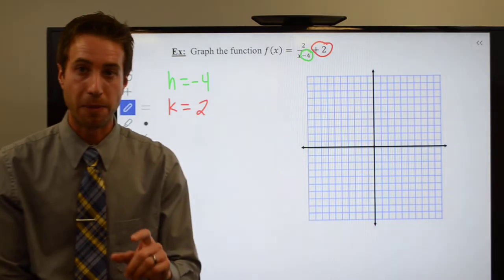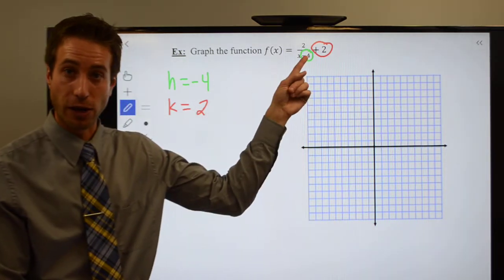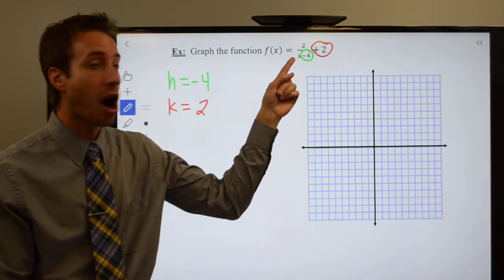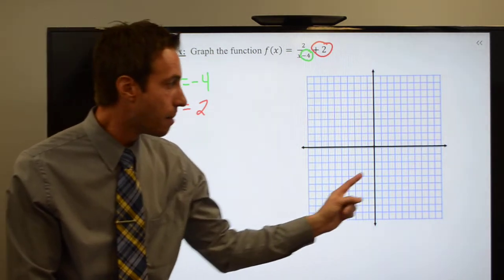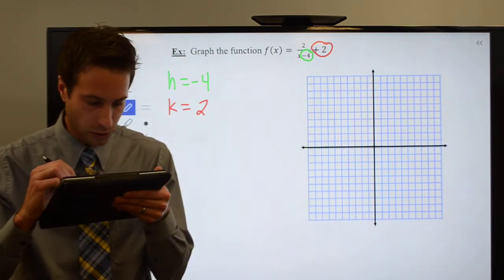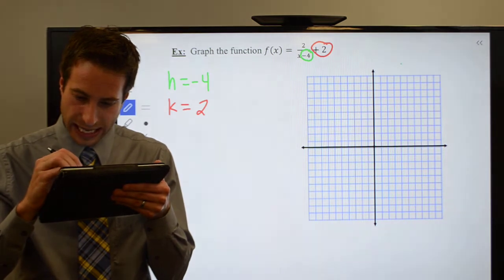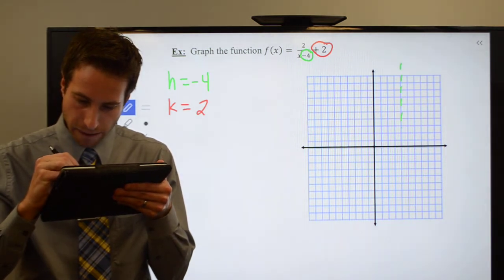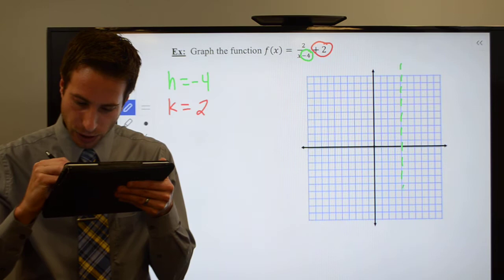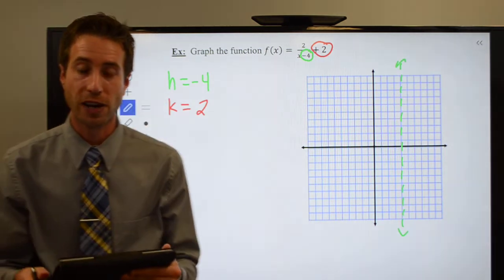Now remember, H is the opposite. Since I have a negative 4 in the function, that means positive 4 gives me division by 0. So my vertical asymptote needs to be a positive 4. Let's put that in there: 1, 2, 3, 4 right here is my vertical asymptote.